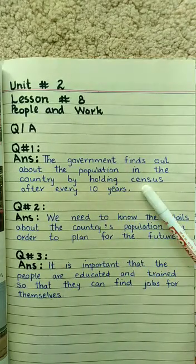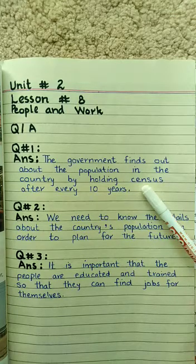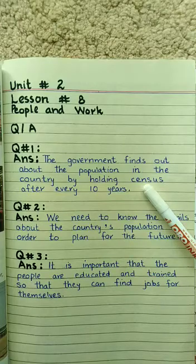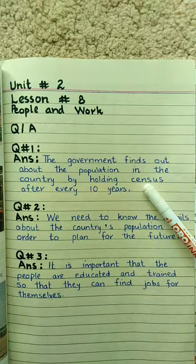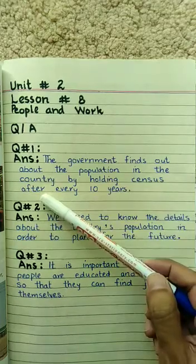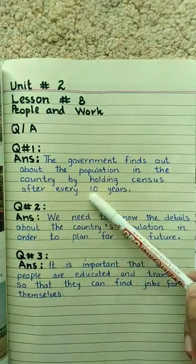What is a census? Census is the counting of the people, and in a census we also collect information about the people. This information is called data. The kinds of information collected in the census include the ages of the people, occupations, religions, languages, education, and so on. A census is conducted after every 10 years.